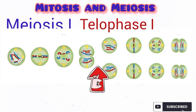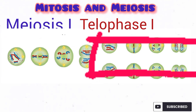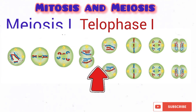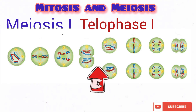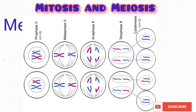A brief period occurs between meiosis 1 and meiosis 2 called interkinesis. Unlike interphase, there is no DNA replication during interkinesis. Meiosis 2 consists of the same phases: prophase 2, metaphase 2, anaphase 2, and telophase 2.